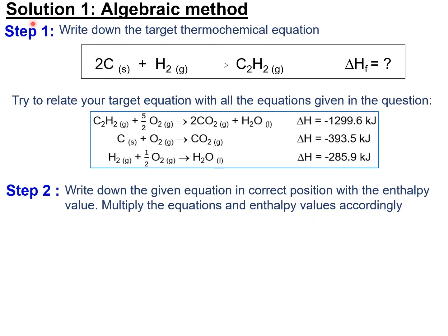For the algebraic method, step 1: write down your target thermochemical equation — the one whose enthalpy change you want to find. Then, try to relate the target thermochemical equation with the equations given in the question. First, look for carbon in the three thermochemical equations. Carbon appears in the second thermochemical equation.